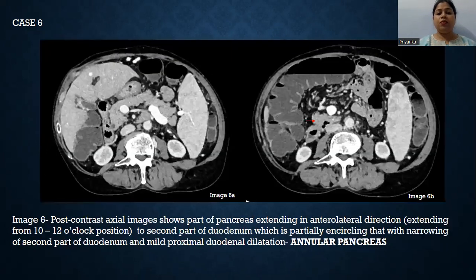Case number six shows post-contrast axial images demonstrating part of the pancreas extending in the anterolateral direction to the second part of the duodenum, partially encircling it with narrowing of the second part of the duodenum and mild proximal duodenal dilatation. These findings are suggestive of annular pancreas, a developmental anomaly.